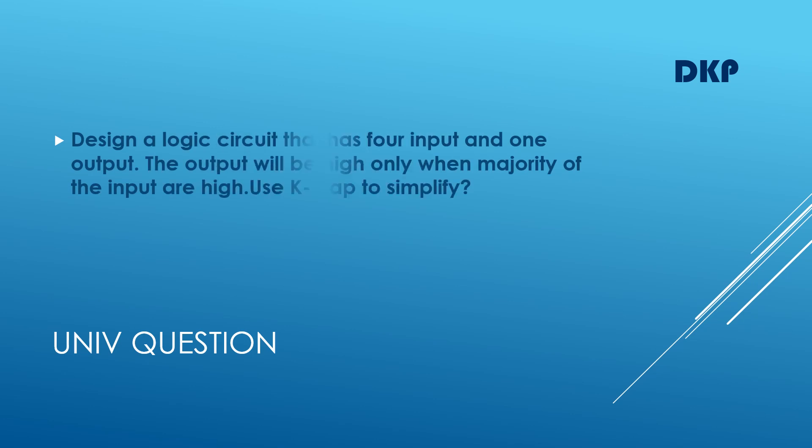Here is the next question: Design a logic circuit that has four inputs and one output. The output will be high only when the majority of the inputs are high. Use K-map to simplify. The solution of this question has been explained in my previous video. The link of that video is in the description box. Thanks for your time.